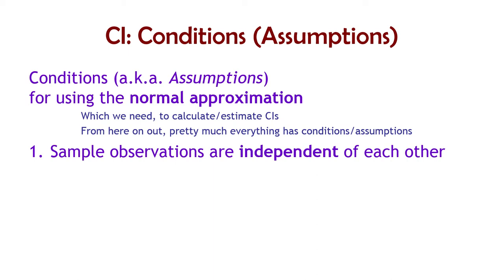First, the sample observations have to be independent of each other. There are two ways independence can be violated. One is thinking carefully: is there some reason they would not be independent — like being paired? A classic example is snowball sampling, where each person in the sample recruited another person. That's not a random sample; the selection of people is dependent on other people in the sample, so they're not independent. But most of the time we can just assume independence is true, unless there's evidence of something weird going on in the sampling.